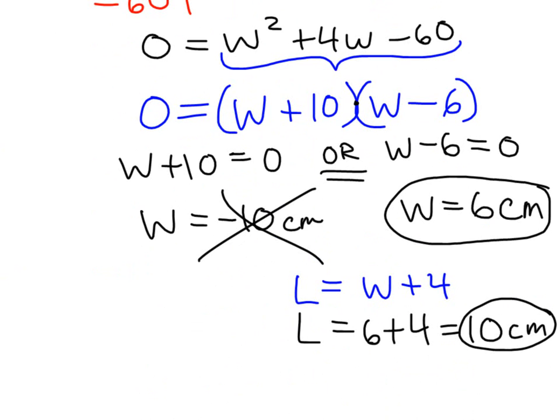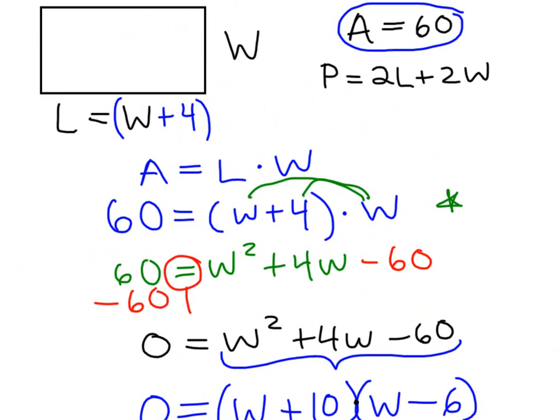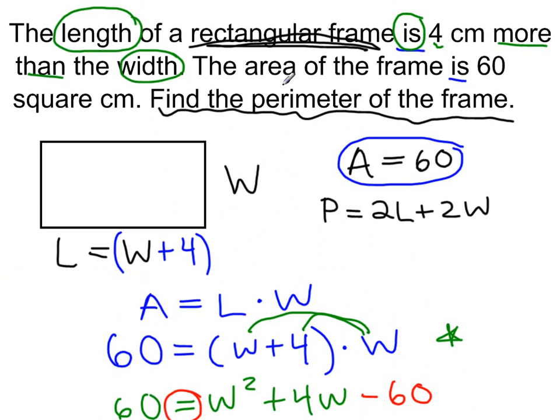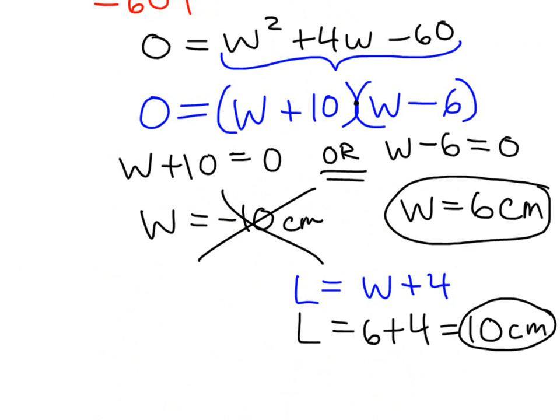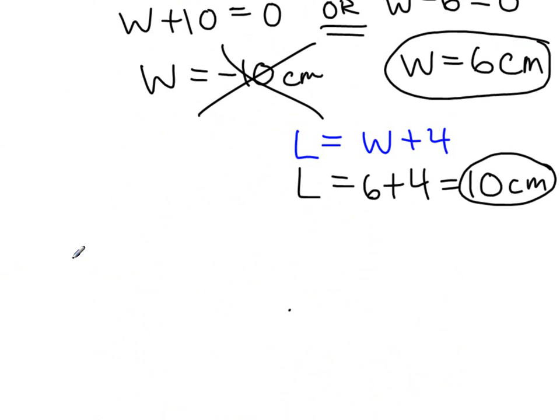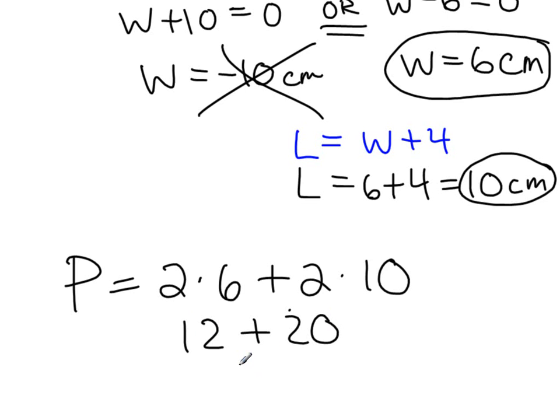Now this question, being the cruel question it was, didn't want any of those. It wanted us to find the perimeter. And we know the formula for perimeter, so we're going to plug in the information we found into the formula. Perimeter equals 2 times the width plus 2 times the length, and we have 12 plus 20 gets us 32.